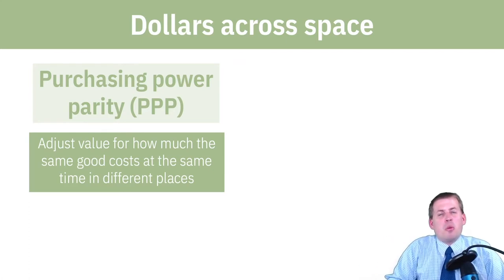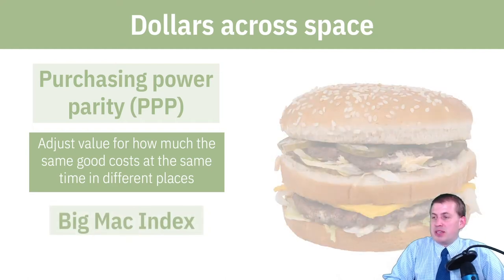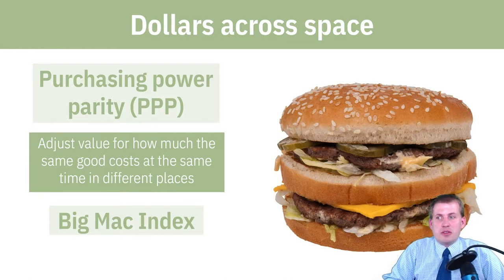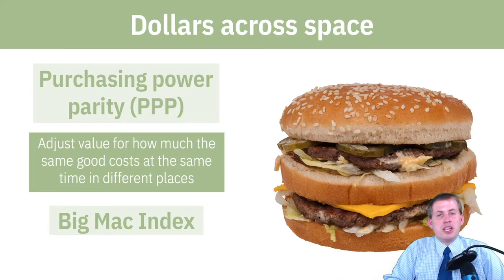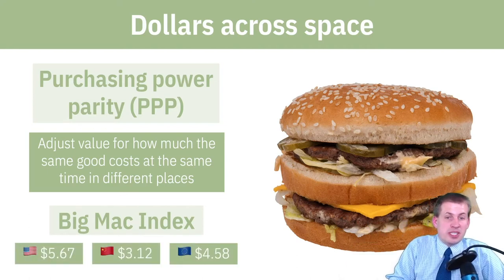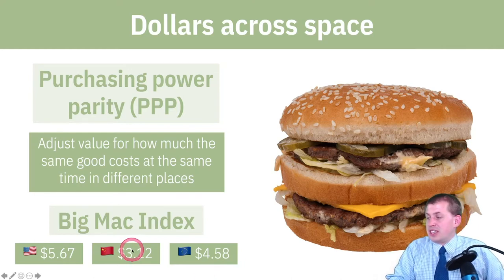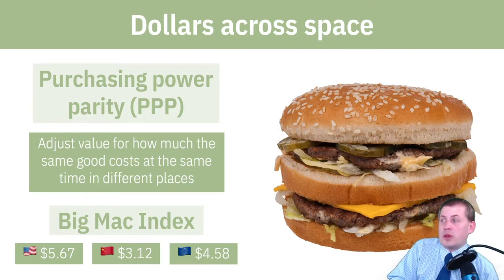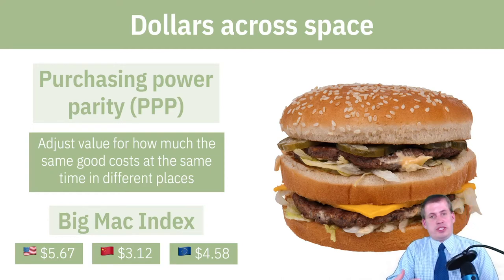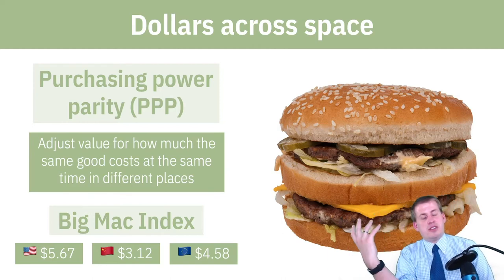One way of thinking about this is The Economist magazine's Big Mac Index. Because McDonald's is in basically every country around the world and has standardized goods, you can figure out the price of a Big Mac in every country and make adjustments to purchasing power based on those prices. For instance, in January 2020, a Big Mac in the United States averaged $5.67. In China, once you adjust for currency conversion, a Big Mac was $3.12 — much cheaper — meaning Chinese currency is somewhat undervalued relative to the US dollar.